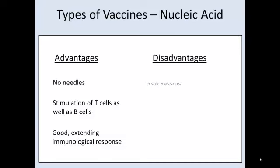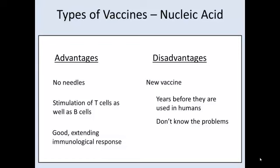Disadvantages of nucleic acid vaccines: it's a new vaccine. So far, only two have been FDA-approved — one for horses, one for farmed salmon. It's going to be years before they are used in humans. Also, because it's brand new, we don't know the potential problems that may arise, which is why we're trying it out in animals first and extending animal studies to identify problems before using it in people.